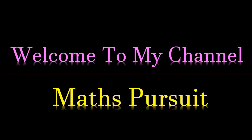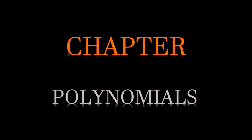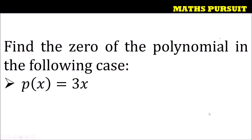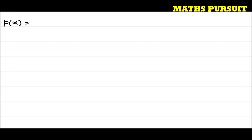Welcome to my channel Maths Pursuit. Today we will look into questions from the chapter called polynomials. The given question is: find the zero of the polynomial in the following case, and the given polynomial is p(x) is equal to 3x. So let us see how we can find out the zero of the given polynomial.